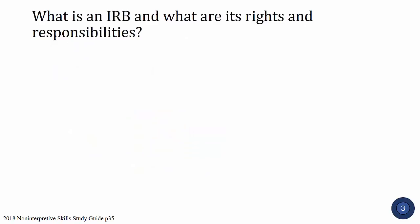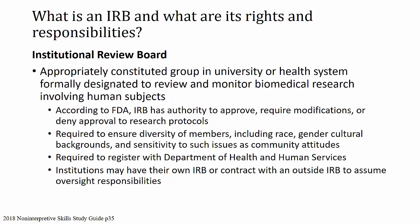What is an IRB and what are its rights and responsibilities? The IRB — Institutional Review Board — is an appropriately constituted group in a university or health system formally designated to review and monitor biomedical research involving human subjects. According to the FDA, the IRB has authority to approve, require modifications to, or deny approval of research protocols. It's required to ensure diversity of its members including diversity in race, gender, cultural backgrounds, and sensitivity to community attitudes. It must register with the Department of Health and Human Services, and institutions may have their own IRB or contract with an outside IRB.